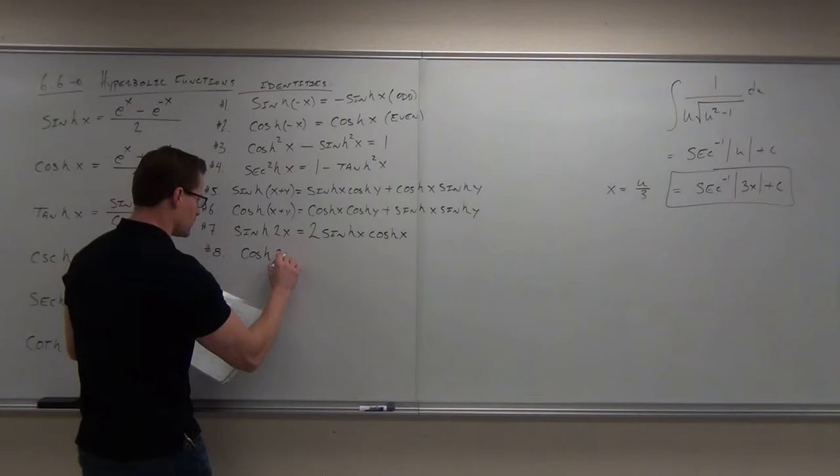Let's do some derivatives. The first example: derivative of cosh²(3t² + 1). Tell me what you see here. Chain rule. In this class, if you don't know the answer to what to do with a derivative, just say chain rule — you'll be right 90% of the time. There's always going to be a chain rule involved.